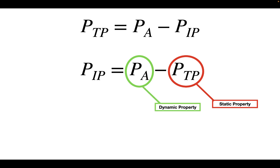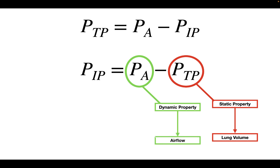The static properties of the lung are going to determine lung volume, whereas the dynamic properties of the lung are going to govern airflow — so where air is going to go. Let's take a look and see how these pressures play out into these specific properties.